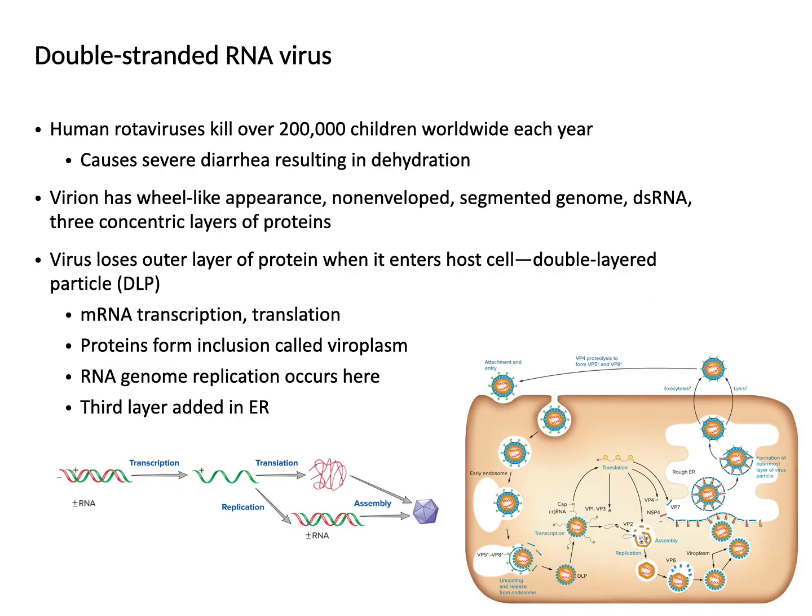With double-stranded RNA viruses, rotavirus is a key example — it can cause diarrhea and dehydration and kills over 200,000 children worldwide each year. Because one of the strands (the positive strand) can be used to synthesize proteins, but when replicating the genome, it needs to make both positive and negative strands for assembly. The life cycle includes attachment, entry and uncoating, synthesis, and assembly.